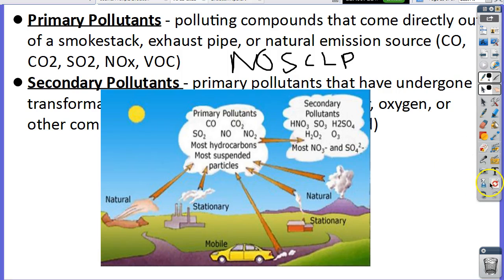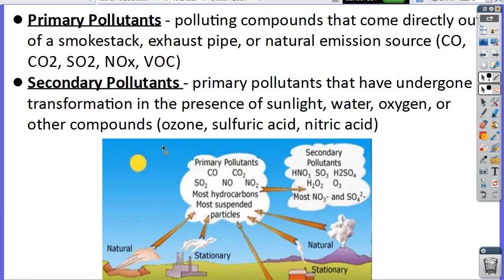These are all the primary things we can control — how much is coming out of cars and smokestacks. Once they're in the air, we get secondary pollutants. They react with sunlight or something else and create harmful secondary pollutants. You'll notice ozone: ground-level ozone forms because pollutants react with sunlight — that's photochemical smog. You'll also see nitric acid and sulfuric acid, the two acids that make up acid rain.